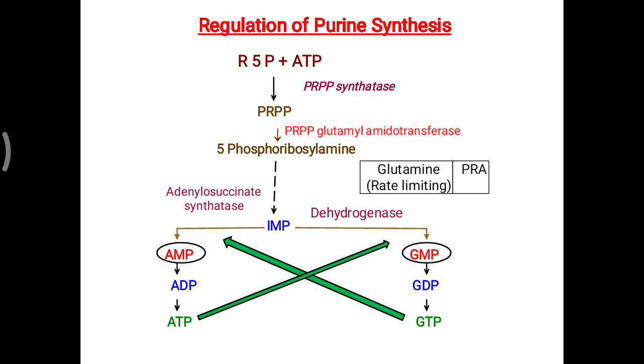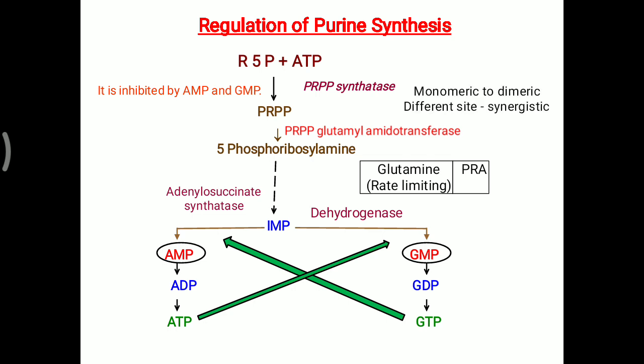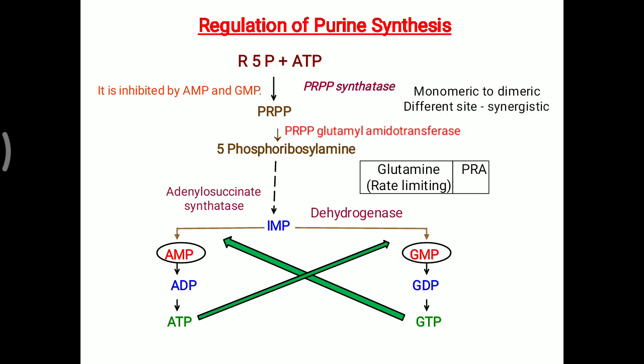Now all these steps are important to remember for regulation. PRPP glutamyl amidotransferase is the rate-limiting and committed step, which is inhibited by AMP and GMP. This amidotransferase enzyme, when monomeric in nature, is in its active form, but when converted into the dimeric form, it becomes inactive.